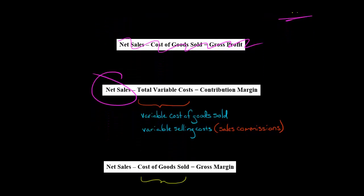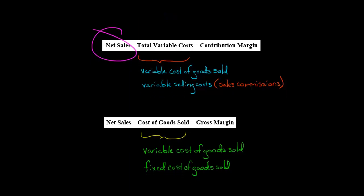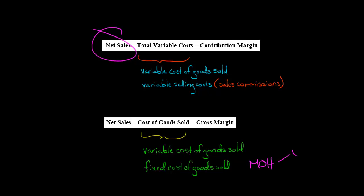Isn't cost of goods sold a variable cost? When we look at a manufacturer like Apple, cost of goods sold is going to have a variable and a fixed component. There are going to be variable costs and fixed costs included in cost of goods sold. The fixed costs included in Apple's cost of sales would be manufacturing overhead, which has both a variable component and a fixed component.